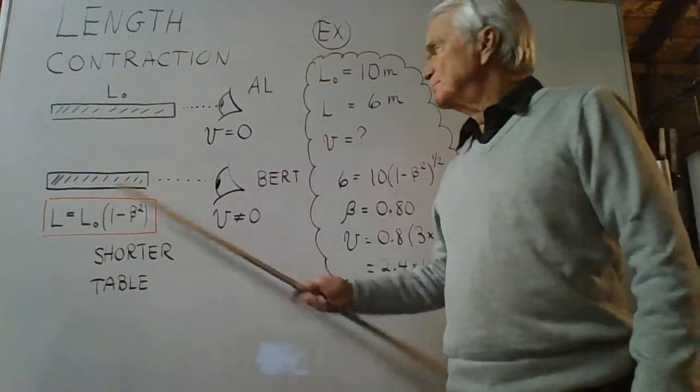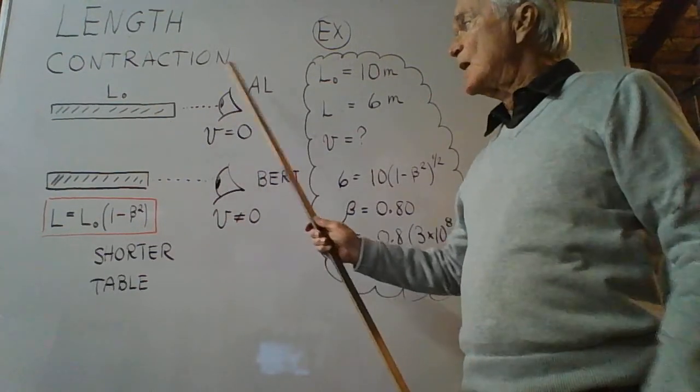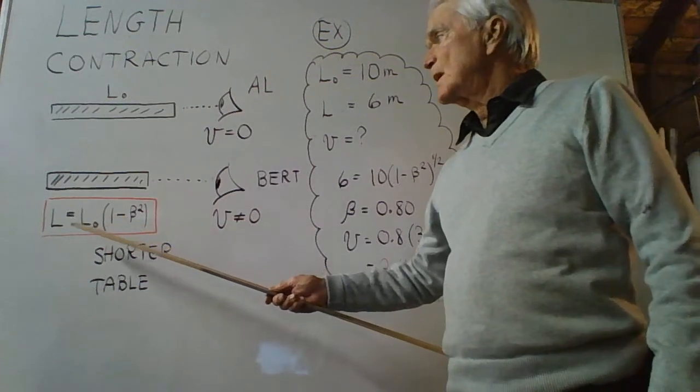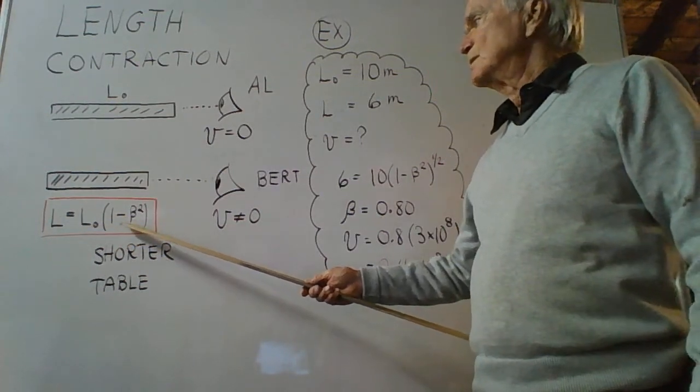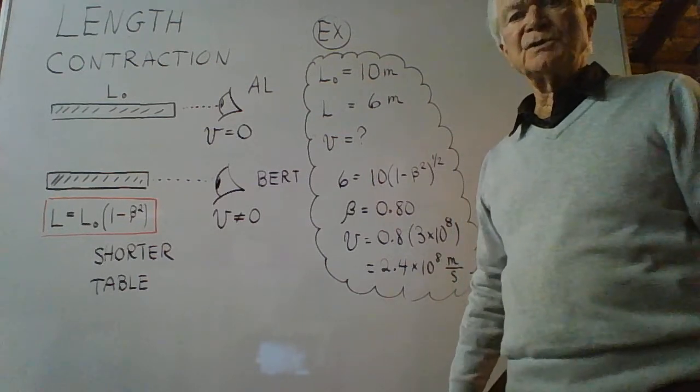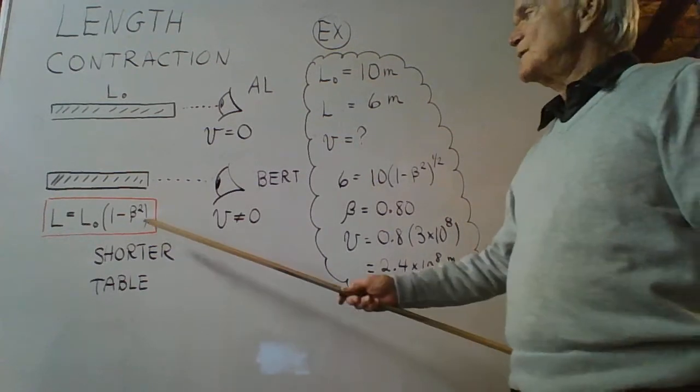The length that Bert measures is shorter than the length Al observes, and it's found using this equation here, where you see the now very well known expression, one minus beta squared.